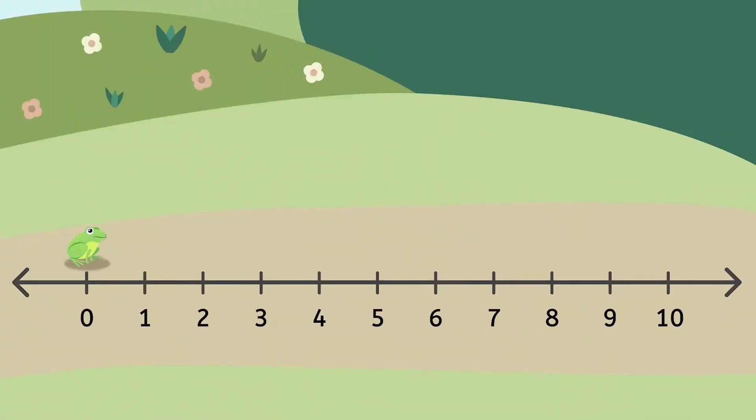Here is Forward Frog hopping along the number line on Number Line Lane. Every time he hops, the number is getting bigger. That means that every time Forward Frog hops, he lands on a number that is one more. So, if Forward Frog starts on four and hops to five, we could say that five is one more than four.